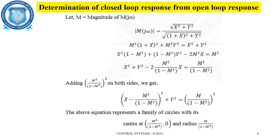Since there is an X² term and an X term, we need a constant term to frame the equation as (A − B)². The third term on the left hand side is −2M² / (1 − M²) · X, so B is identified as M² / (1 − M²). We square that term and add it to both sides, giving the equation: (X − M² / (1 − M²))² + Y² equals the right hand side — a perfect circle equation.